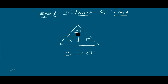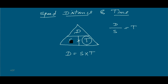Distance and speed have a divide relation. That means, if I take T as constant, then simply you can write D by S — distance by speed. Similarly, if I take the left side as speed, simply you can write D by T. It is very simple to keep the formula in memory with the help of this triangle.